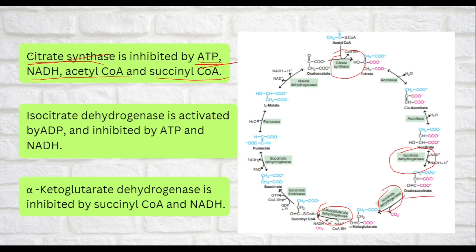Next, we have NADH. NADH is produced at several steps in the cycle — by isocitrate dehydrogenase, alpha-ketoglutarate dehydrogenase, and malate dehydrogenase. So if NADH is already abundant, it inhibits citrate synthase to prevent energy waste.